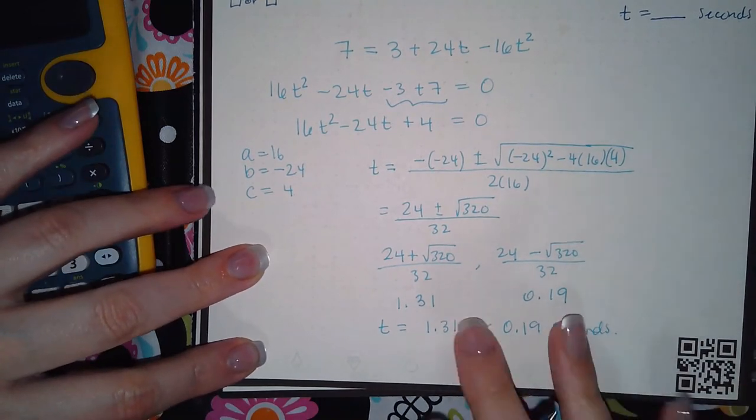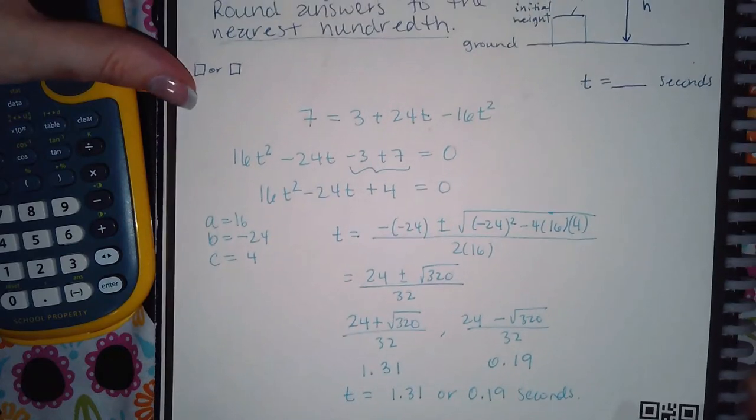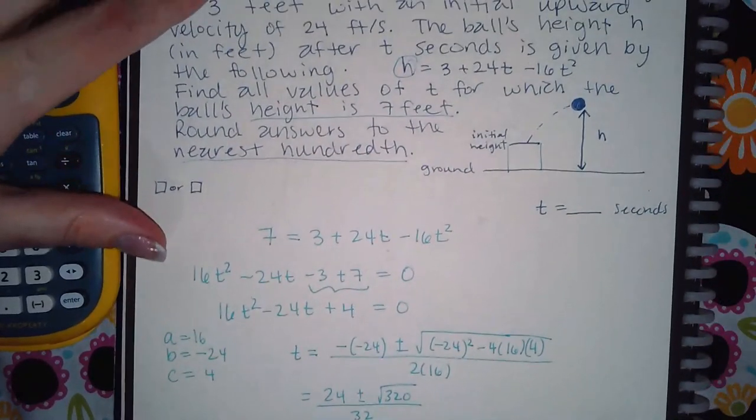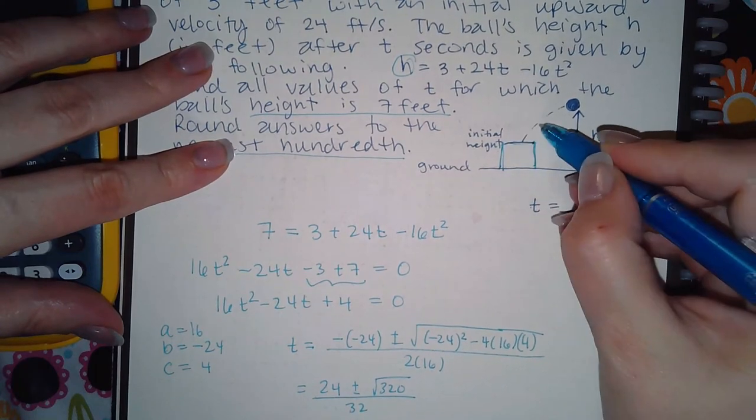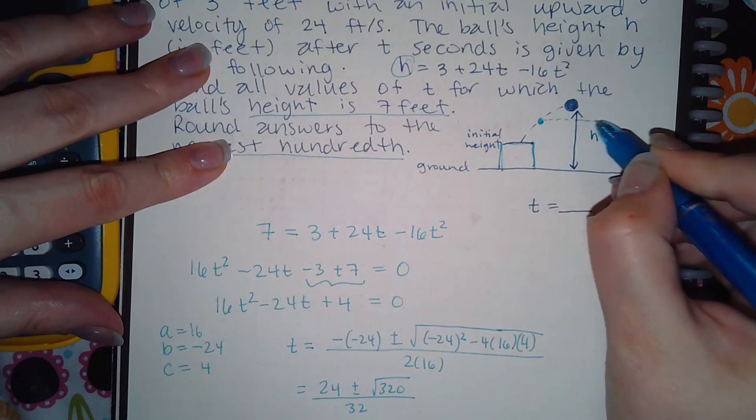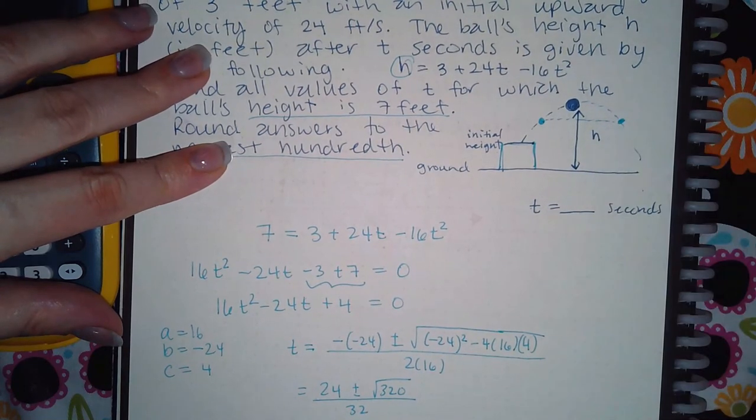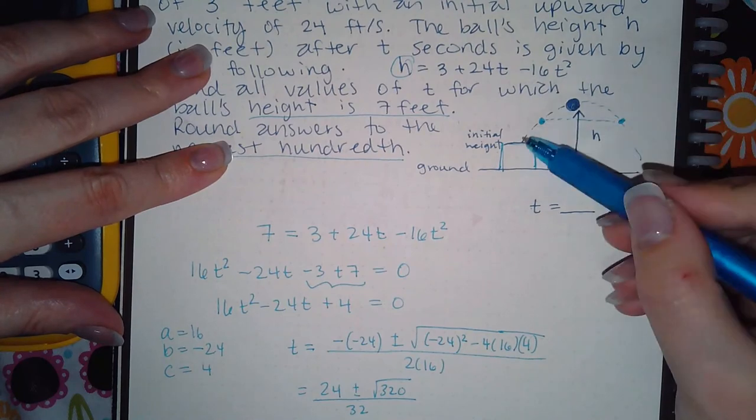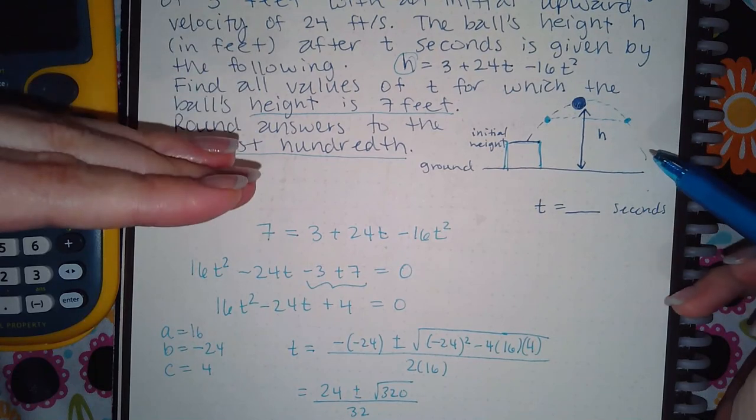And both of these are positive so both of them make sense. What they're also telling me is that from this image, this initial height must have been less than 7 feet, because at some point it's going to hit 7 feet, and then over here as the ball comes down, it'll hit 7 feet again. So it hits 7 feet right as I'm tossing it up, and then it hits 7 feet again as it comes down. That's why we got two positive answers here for this one.